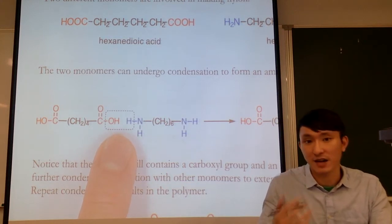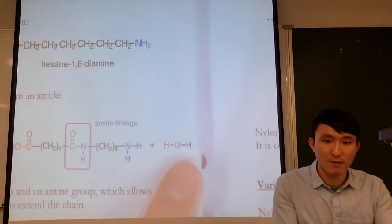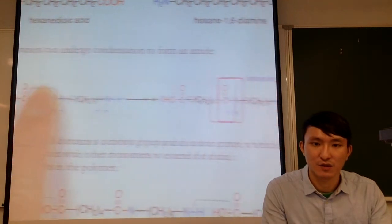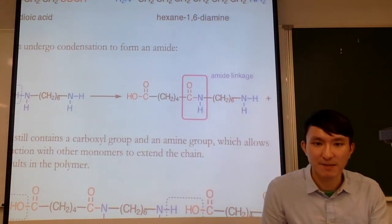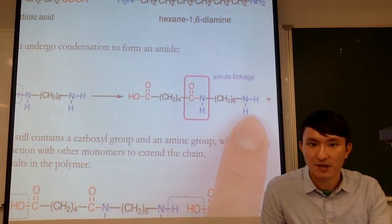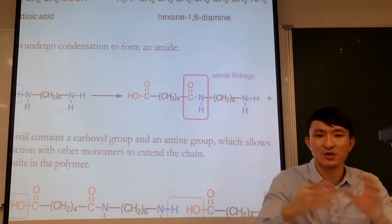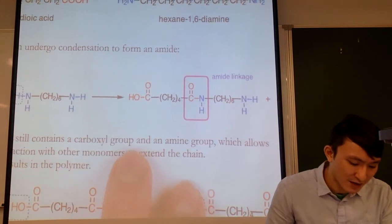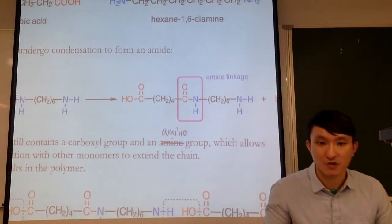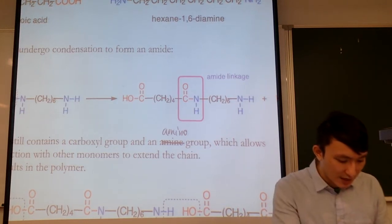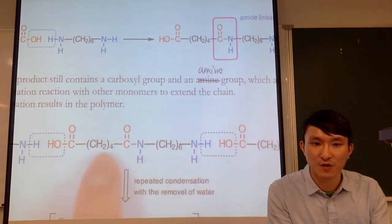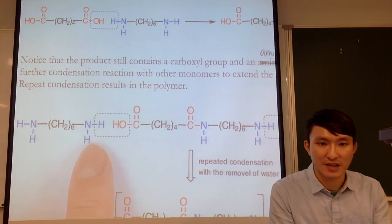When nylon's monomers undergo condensation polymerization, the carboxylic acid provides the hydroxyl group and the amine provides the H, forming a molecule of water. The C and N then join together to form the amide bond or amide linkage. Similar to polyester, after forming this product, the unit still has a carboxyl group and an amino group, allowing further condensation with other monomers to increase chain length.